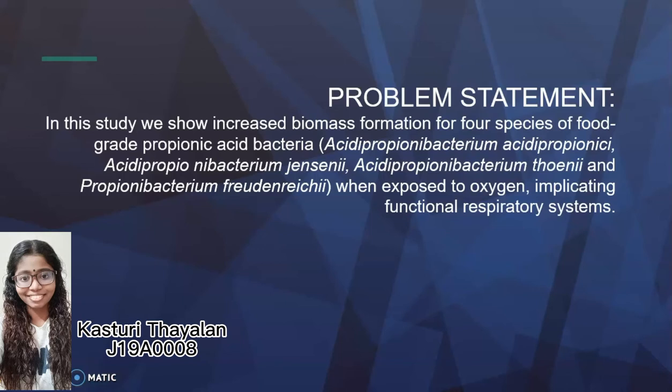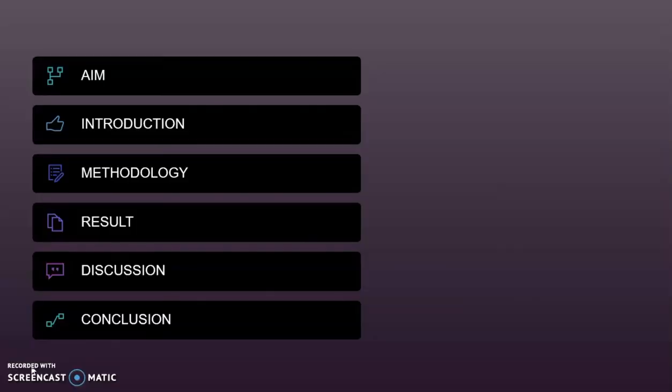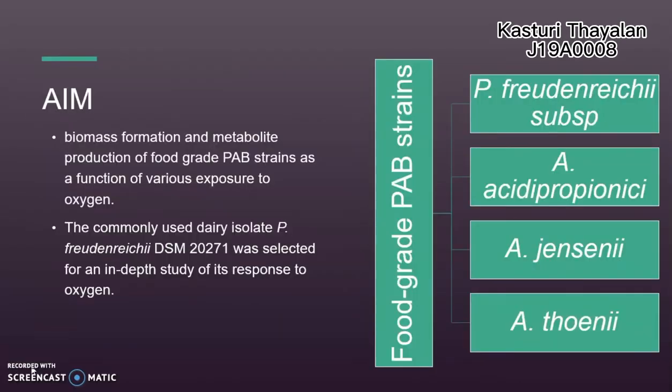For the problem statement, our study aims to show the increased biomass formation of four species of food-grade propionic acid bacteria when they are exposed to oxygen, implicating a functional respiratory system. The aim of our study is to find the biomass formation and metabolite production of four species of food-grade PAB strains when exposed to various levels of oxygen.